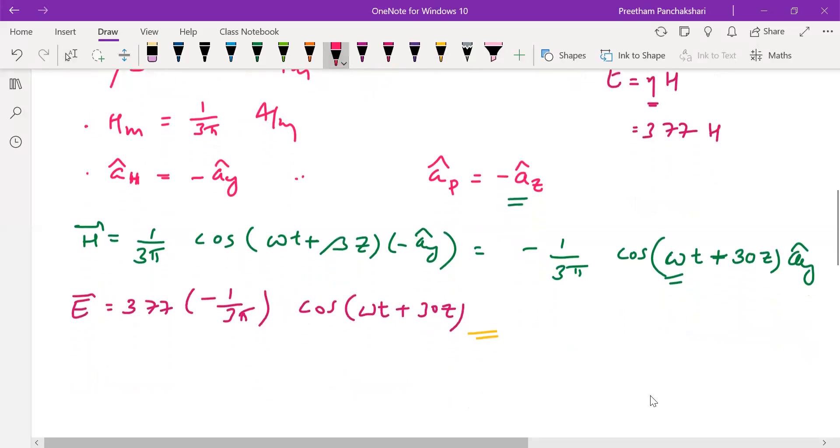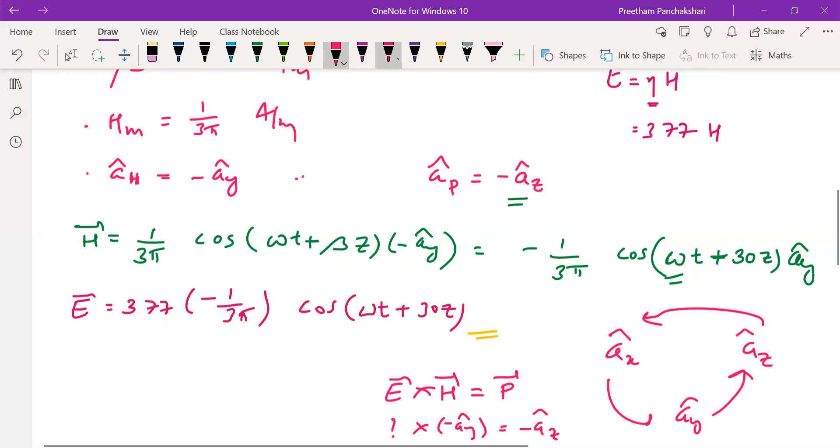So we know that we can find the direction of the fields using this idea. We can find the direction of the wave propagation. So follow this rule. What is the direction of the electric field? Don't know. Direction of the magnetic field minus Ay is equal to Z. So both are minus.